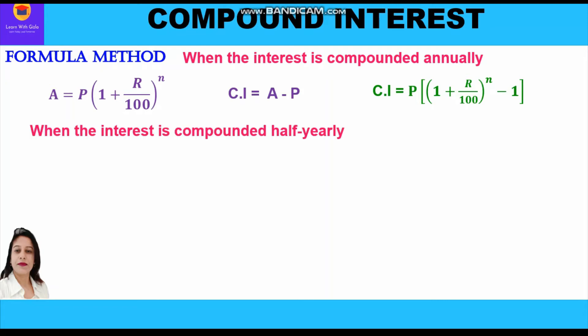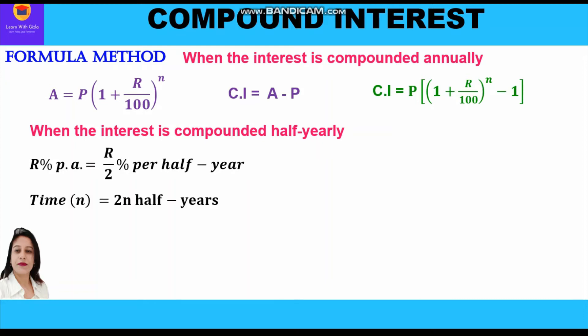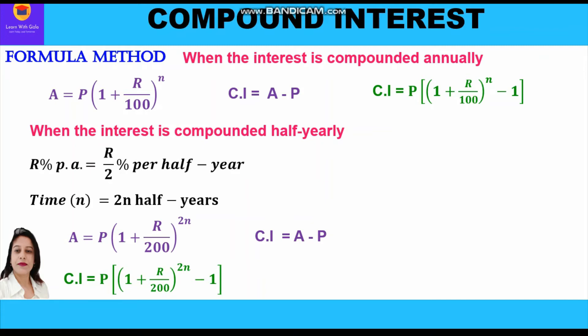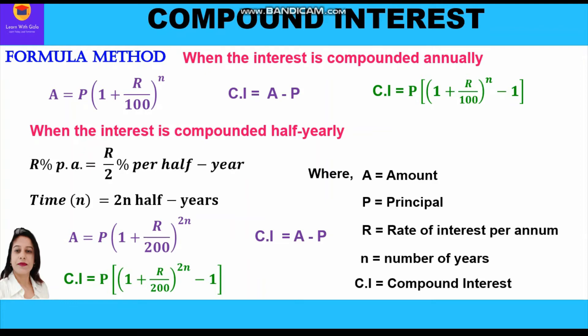When interest is compounded half-yearly, the rate percent per annum given in the question is divided by 2, giving r/2 percent per half-year, and the time period is multiplied by 2, giving 2n half-years. The amount formula becomes: A = P(1 + r/200)^(2n). Compound interest is A − P, or directly: CI = P[(1 + r/200)^(2n) − 1]. Here A is amount, P is principal, r is rate per annum, n is number of years, and CI is compound interest.